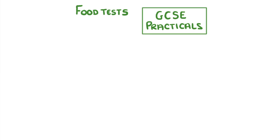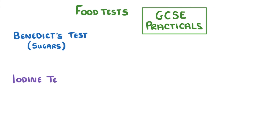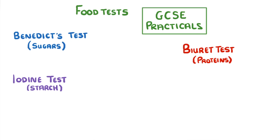In this video we're going to run through the different food tests and cover all the ones you need to know for your GCSE biology practicals. We'll cover the Benedict's test which is for sugars, the iodine test for starch, the biuret test for proteins, and the Sudan 3 test for lipids.